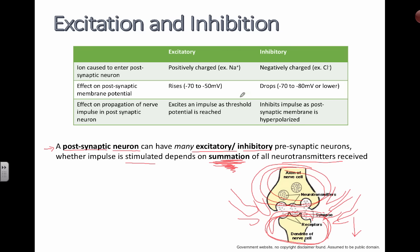This table summarizes a couple of ways that you can excite or inhibit a particular neuron. If the ion that goes in is positively charged, you can end up causing the membrane potential to rise higher. Or if they're negatively charged ions, you can cause the membrane potential to drop.